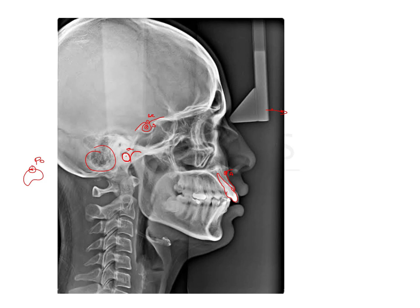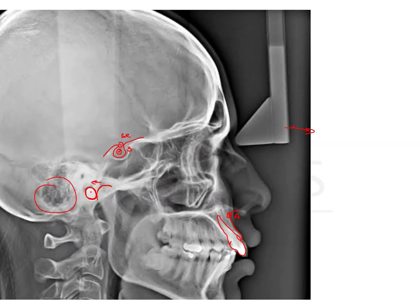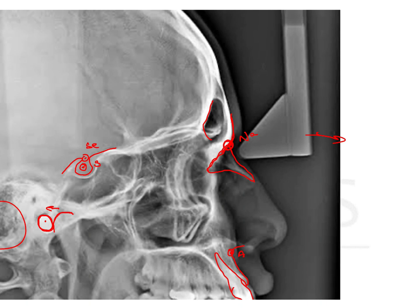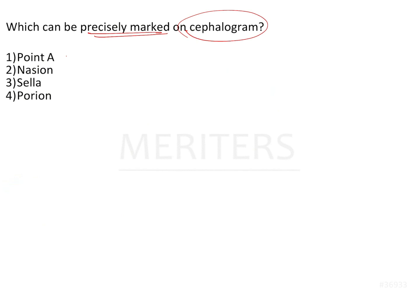The nasion is the most anterior point on the frontonasal suture in the midsagittal plane. The frontal bone is prominent on the cephalogram, as is the nasal bone, and the suture between them is very clearly demarcated. Once you identify the suture, the most anterior point is marked as the nasion — a very definitive and clear point. So from all the options — point A, nasion, sella, and porion — the one that can be most precisely marked is the nasion.